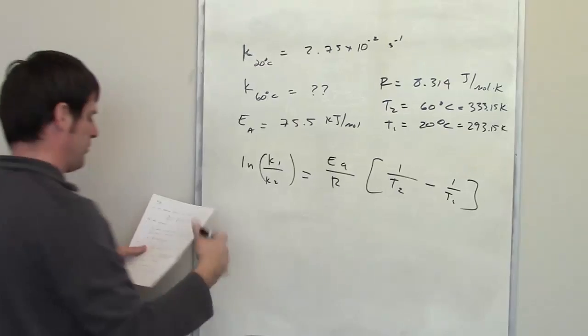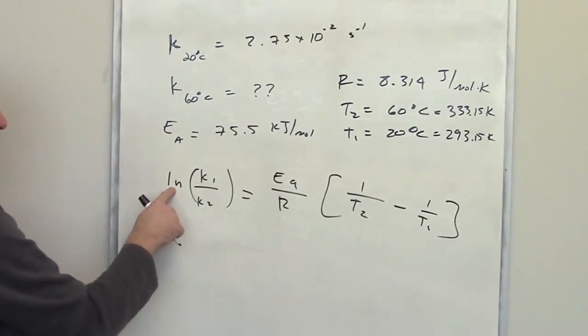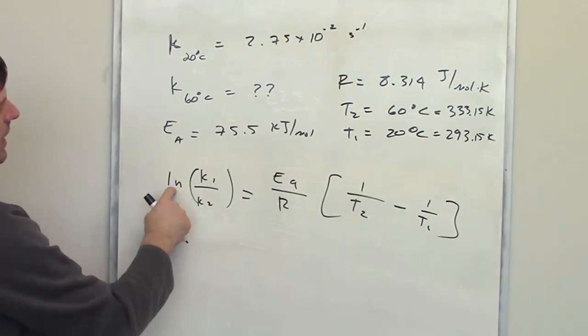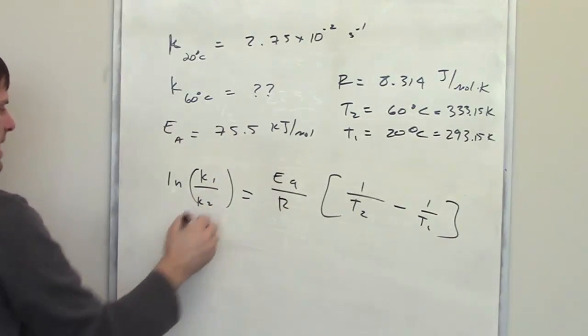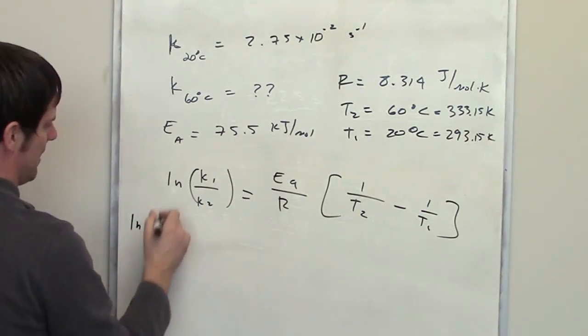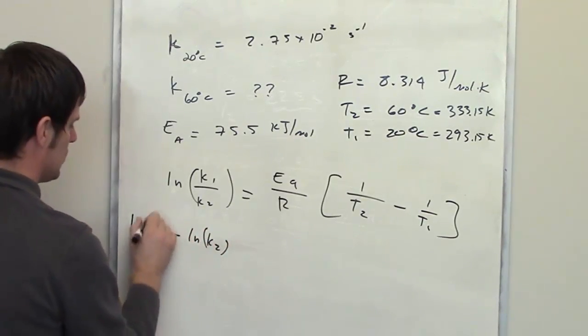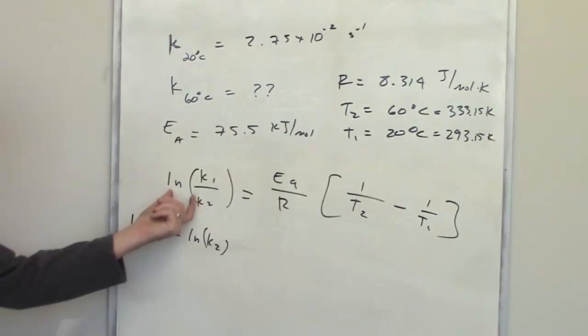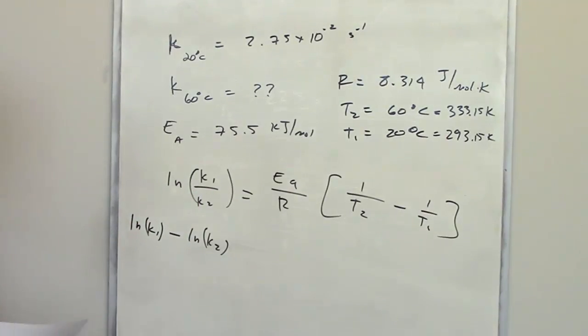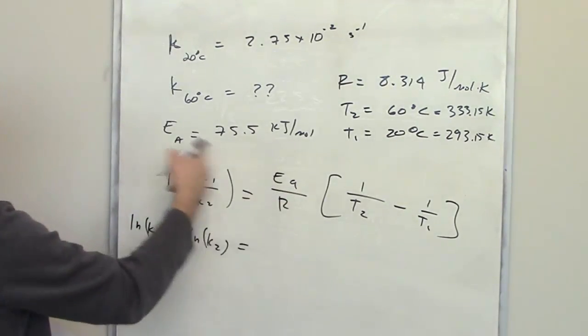So I'm going to go ahead and remember from my basic algebra that if you have the ln, or natural log, of one number divided by another number, it's the same thing as having the natural log of the numerator minus the natural log of the denominator. So I can go ahead and separate that out, or rewrite this as this. Hopefully you're okay with that. I then throw in my numbers.